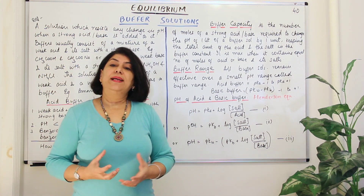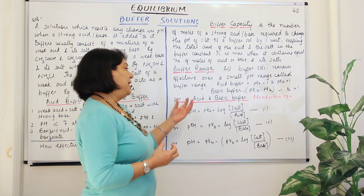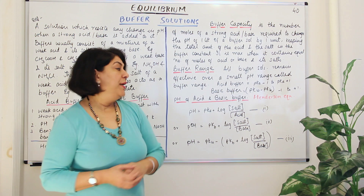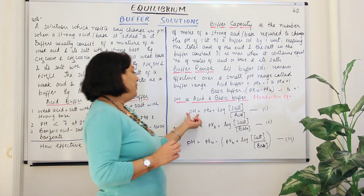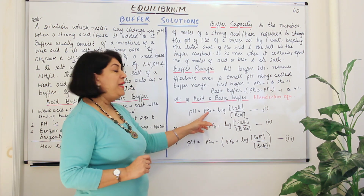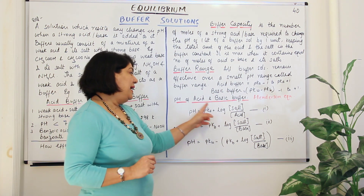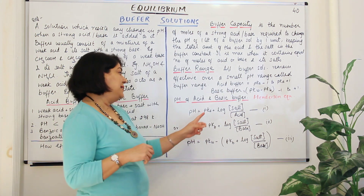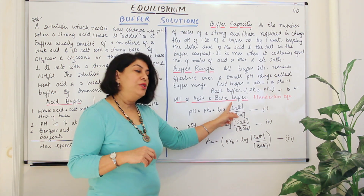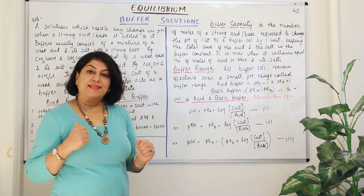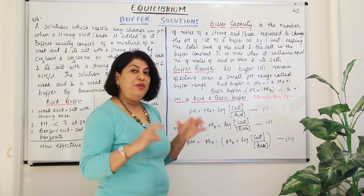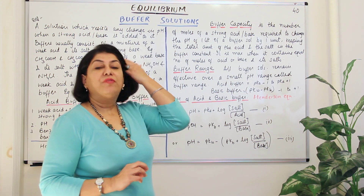You can calculate the pH of an acidic buffer using the Henderson's equation. For an acidic buffer, pH = pKa + log([salt] / [acid]), where pKa is the dissociation constant of the weak acid and the concentrations are those of the salt and the acid. This gives you the pH of the acidic buffer.